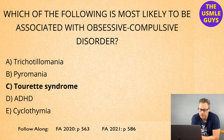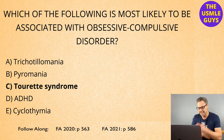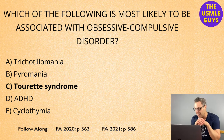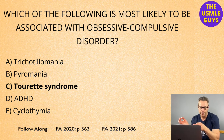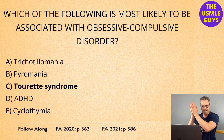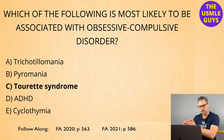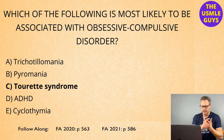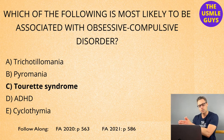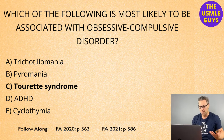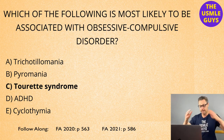OCD is called ego dystonic, meaning the behaviors the patient demonstrates are inconsistent with their beliefs and attitudes. This helps differentiate OCD from OCD personality disorder, which is ego syntonic — meaning it is consistent with the patient's beliefs and attitudes. OCD disorder: ego dystonic, inconsistent with beliefs. OCD personality disorder — characterized by an excessive need for cleanliness and control — is ego syntonic, consistent with their beliefs, and oftentimes the patient doesn't think anything is wrong.